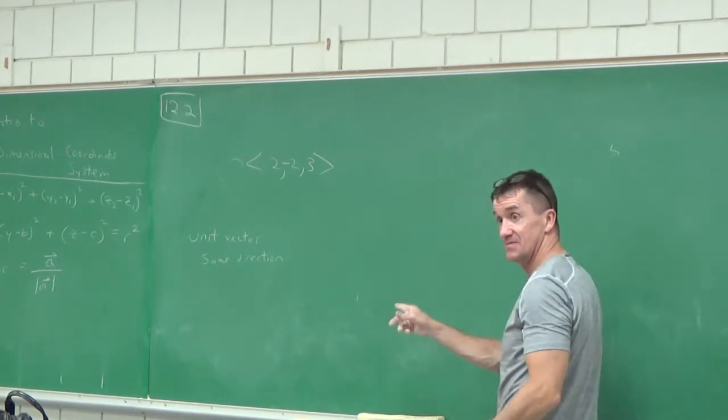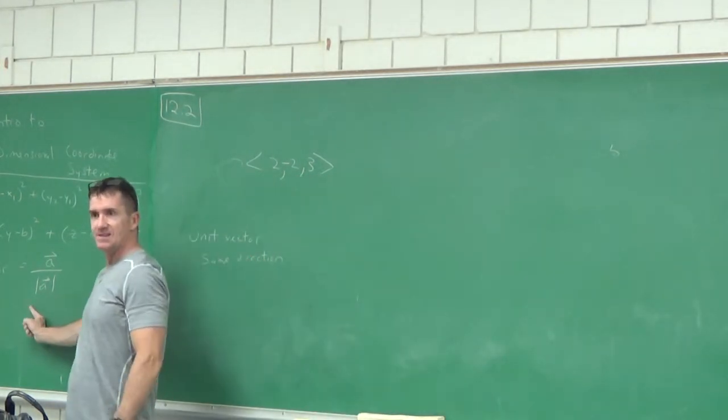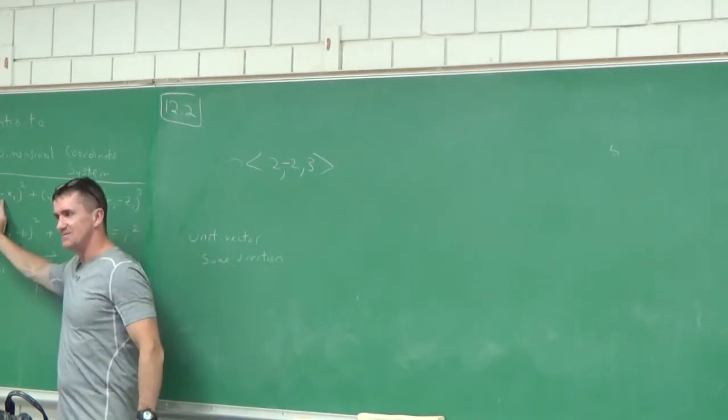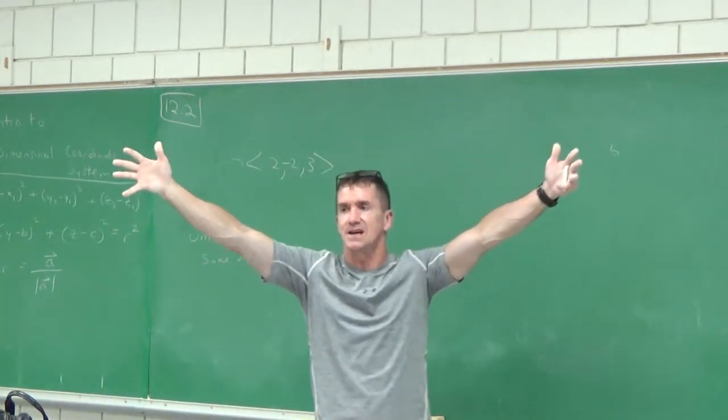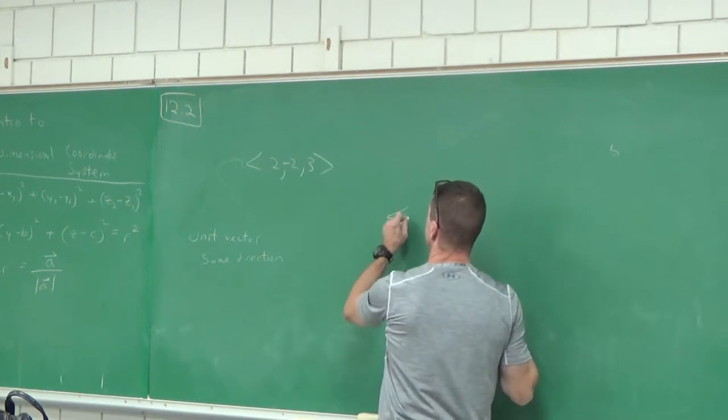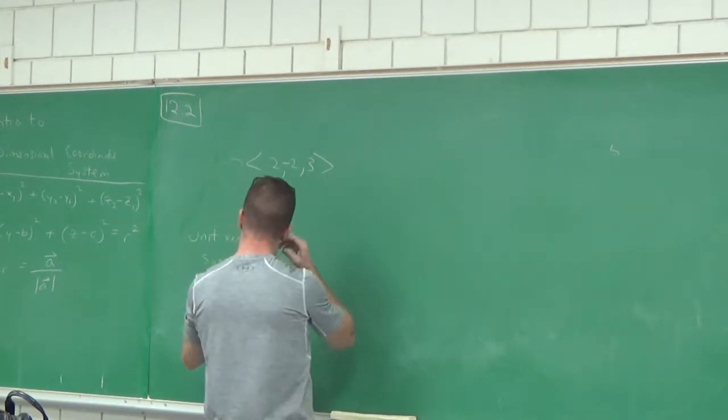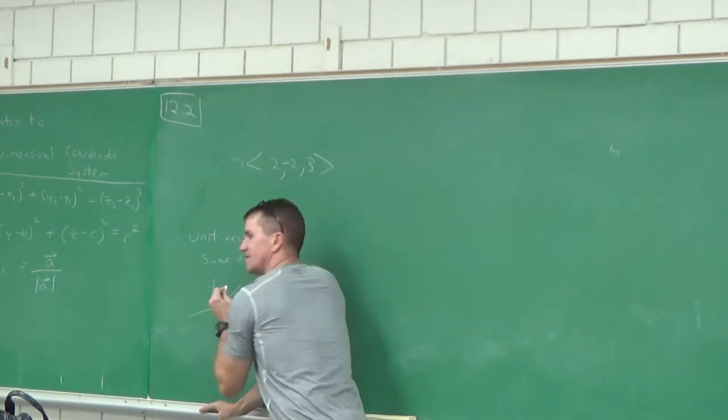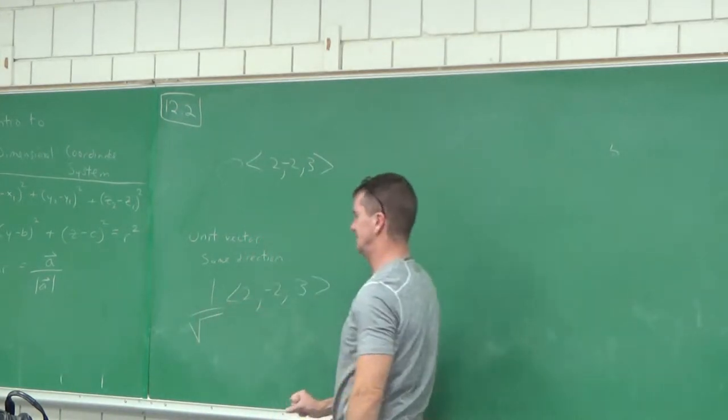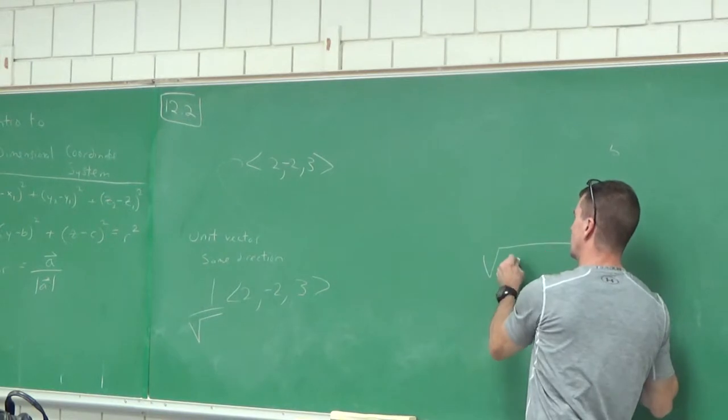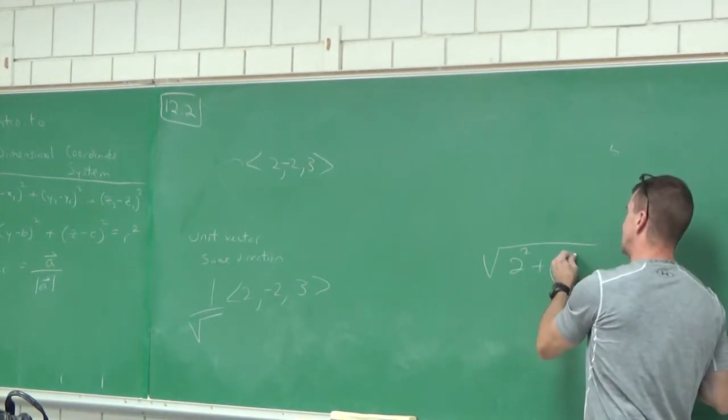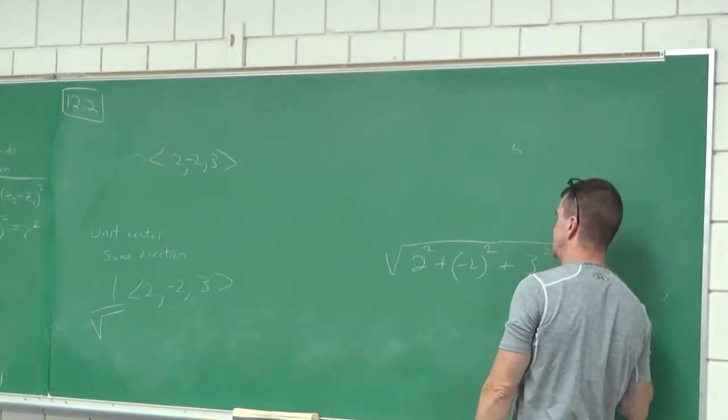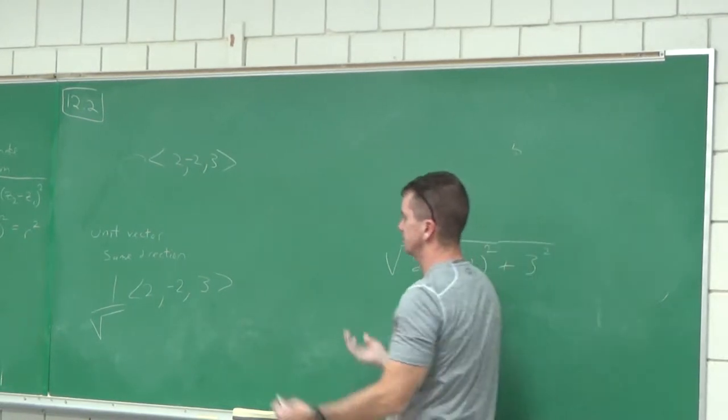Because that does not have length of one, does it? Okay, but we already have a math formula, don't we? You nailed it. You knew this was the Pythagorean Theorem. Remember, I have to divide out the magnitude. But you're just like, how do you get the magnitude of a three-dimensional vector? It's kind of like this, isn't it? You're doing Pythagorean Theorem extended. So here's my answer, right here. There you go. But what are we dividing out? The square root of two squared plus negative two squared plus three squared.